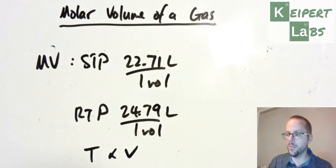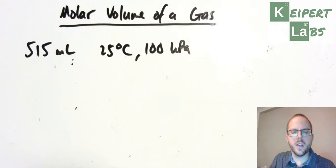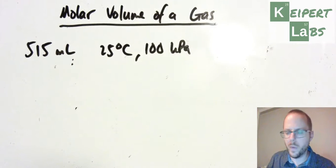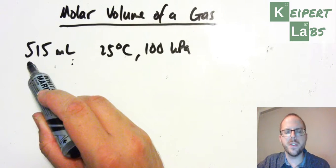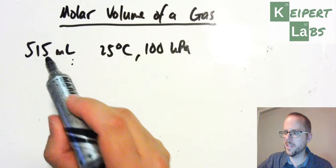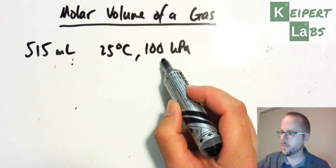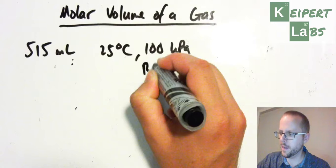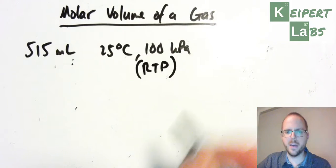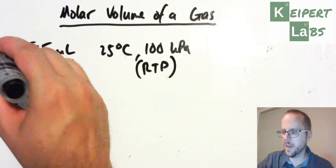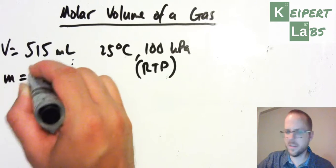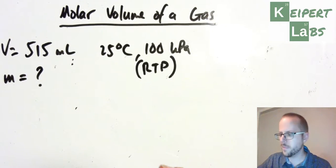So we need to be able to be confident in using these values in calculations. So I'm quickly going to go through the example that you see in the booklet there. So in looking at this example, we're looking at a flask that has a volume of 515 mils, and saying at 25 degrees Celsius and 100 kilopascals, which remember, that's our RTP conditions and value that we'll use, saying, all right, well, what mass of gas do we have in that container?